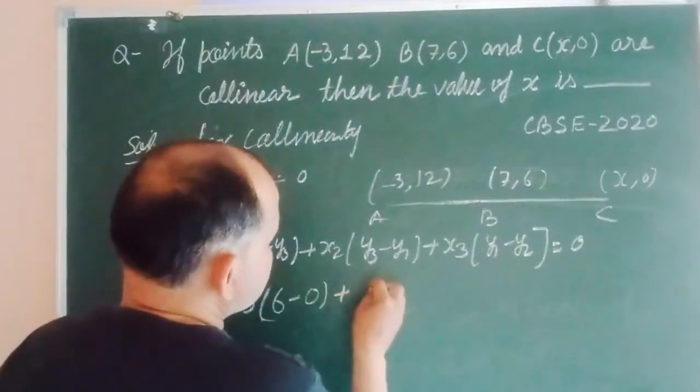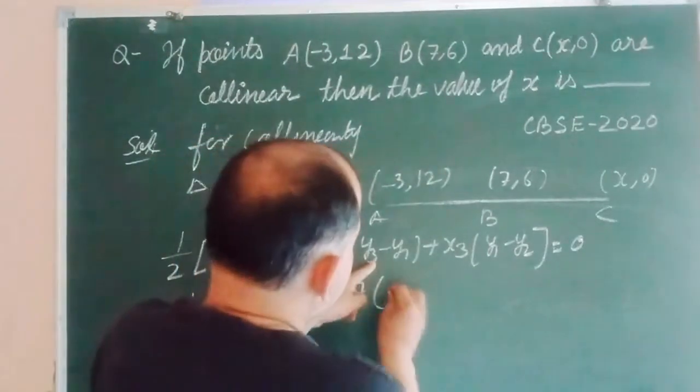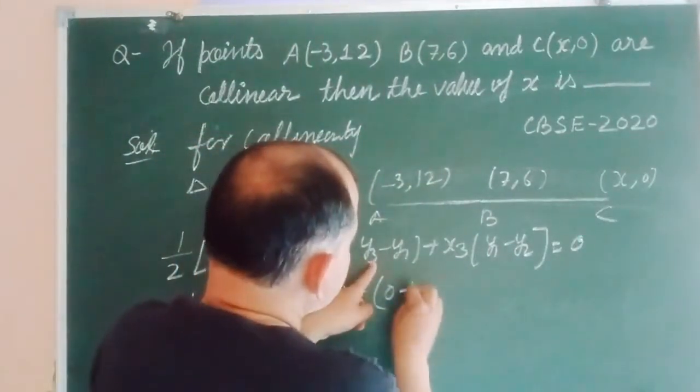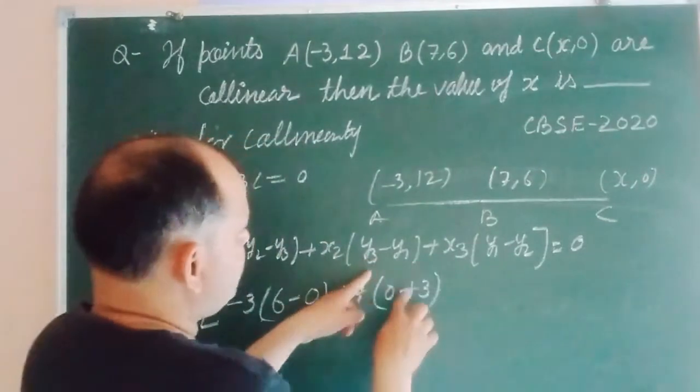Plus X2 is 7. So here Y3, Y3 is 0, minus Y1 is minus 12.